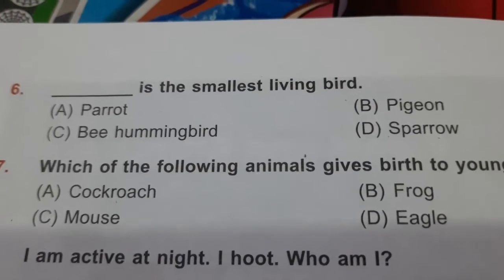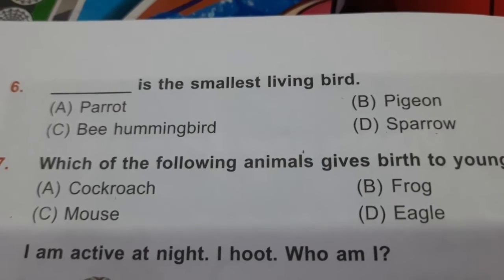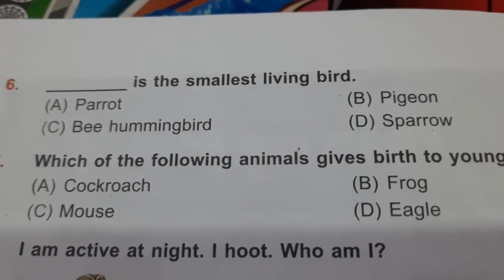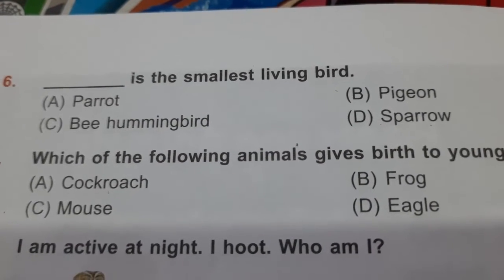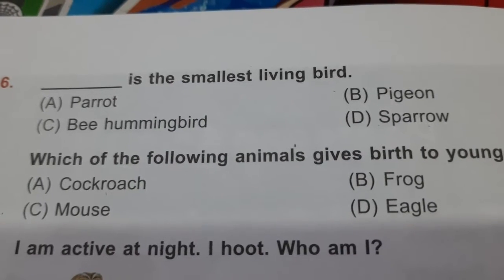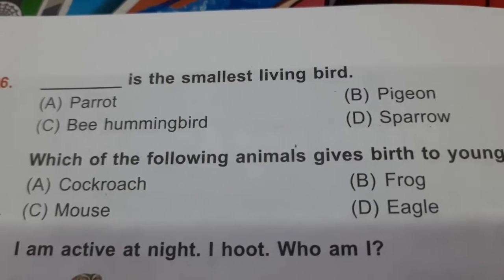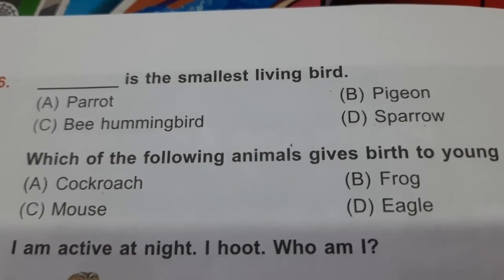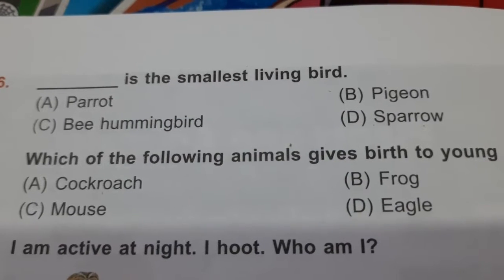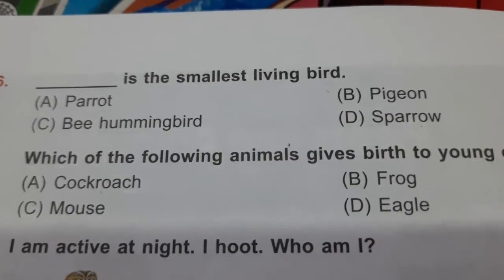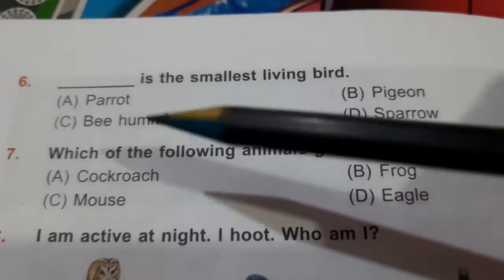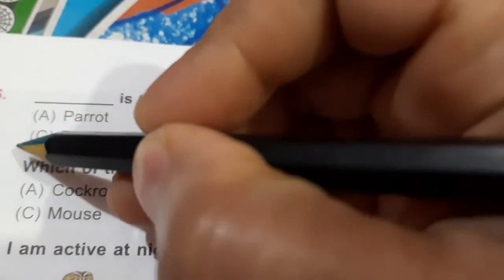Moving on to question number 6: dash is the smallest living bird. The smallest living bird is B, hummingbird, which is up to 6 centimeters in height. Please tick it and transfer to the OMR sheet as well.